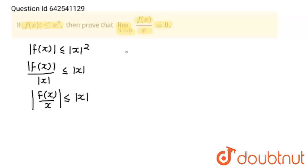Now, I am going to put limit on both sides. So, lim x→0 |f(x)/x| ≤ lim x→0 |x|.